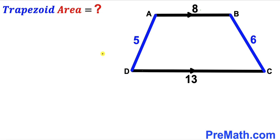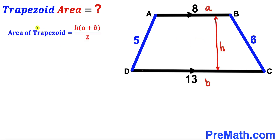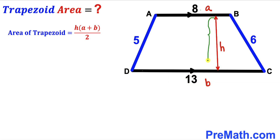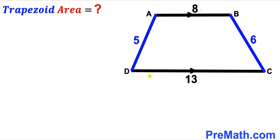Let's get started. Since we are interested in calculating the area of trapezoid ABCD, let's recall the area of a trapezoid formula. Area is equal to height H times the sum of the bases A and B, all over 2. Here base A is 8 units, base B is 13 units, and height H is what we need to find. So we are going to draw some auxiliary lines to make our job simpler.